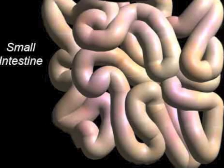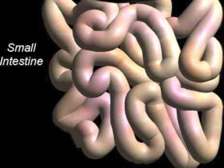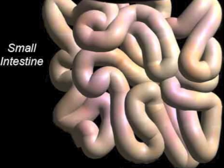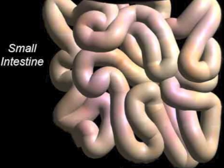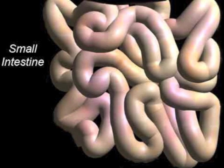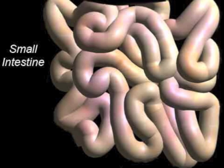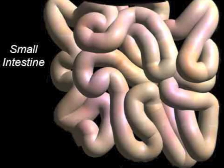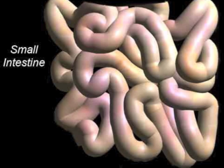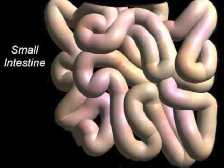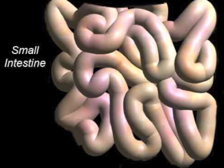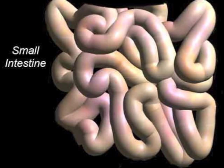This then moves into the small intestine, where many enzymes are secreted. For example, peptidase helps digest peptides. Amylase, maltase, and lactase are secreted to break down sucrose, maltose, and lactose into monosaccharides. The small intestine also breaks down lipids into fatty acids and glycerol with intestinal lipase. Nutrients are absorbed here in the small intestine.